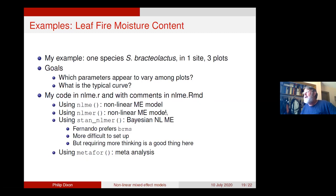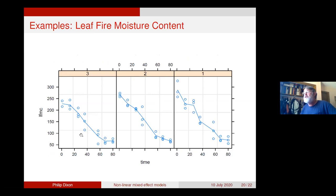I'm going to demonstrate using NLME and LMER, the Bayesian version using Stan and LMER, and note that Fernando prefers a different Bayesian package that requires a bit more thinking — though that's quite likely a good thing here — and then use the metaphor package to do meta-analysis. There's the data: no treatments, three plots, interested in the typical curve and the variability between plots.